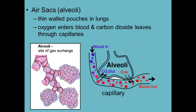Air sacs are thin-walled pouches inside the lungs. This is where oxygen enters the blood and carbon dioxide leaves the blood. These can also be called alveoli. So, alveoli are the site of gas exchange. As you can see in the diagram here, your blood comes in and the alveoli take the CO2, or carbon dioxide, out of the blood and put oxygen in, because they're attached to the lungs.